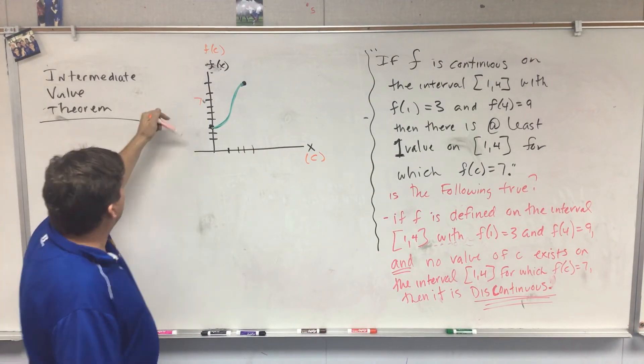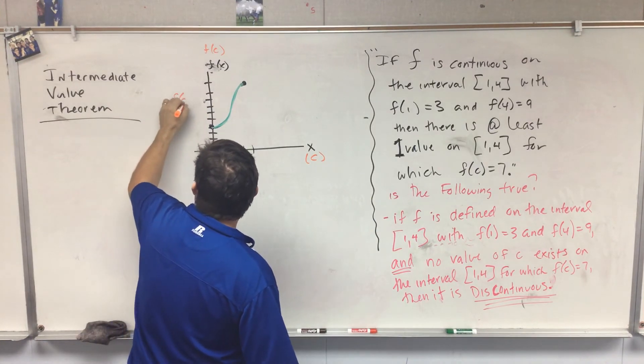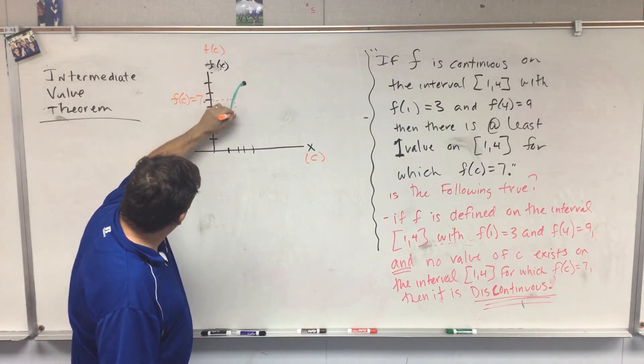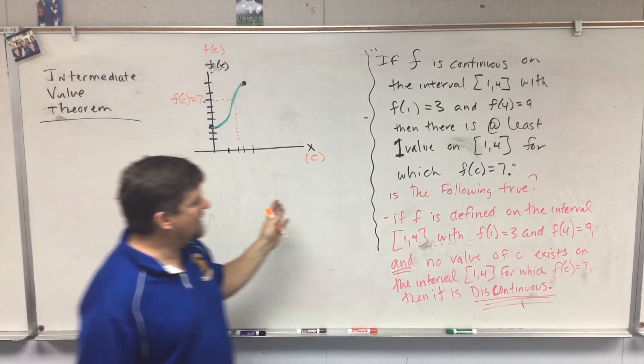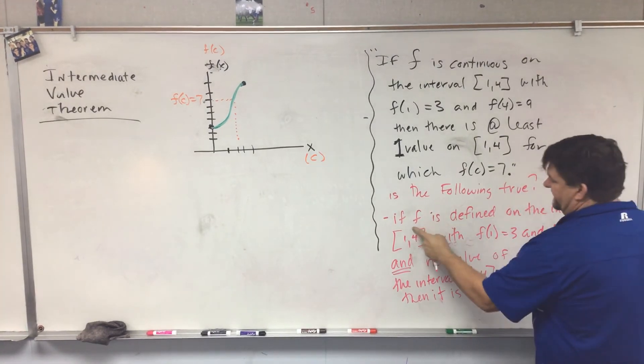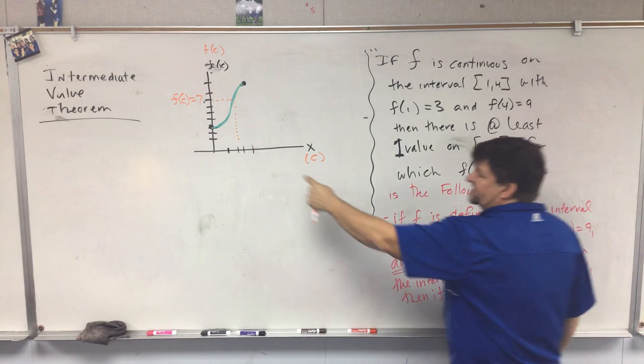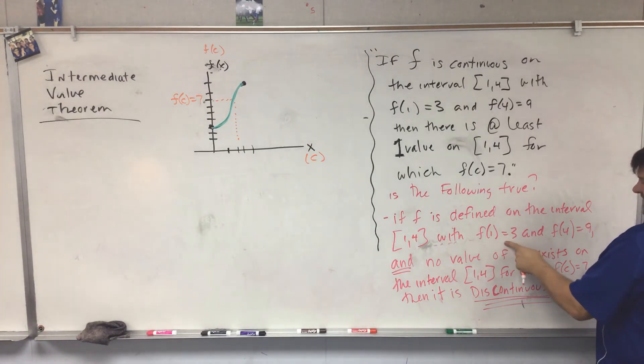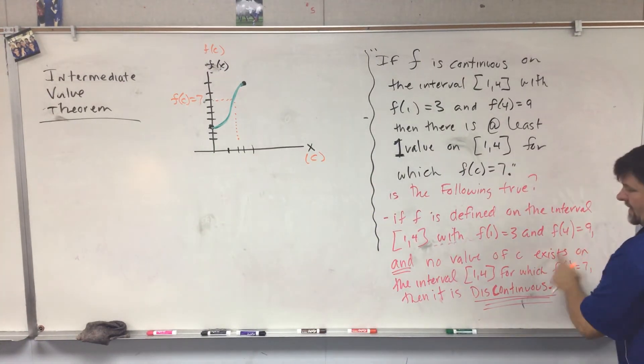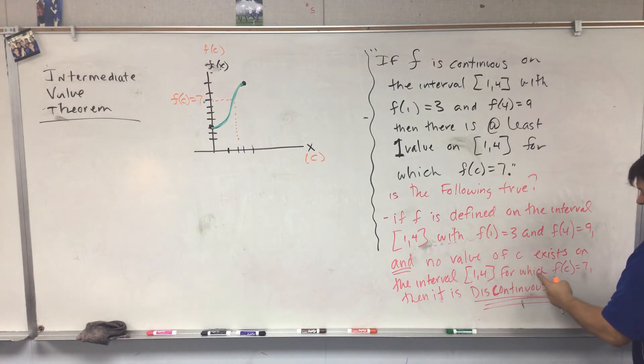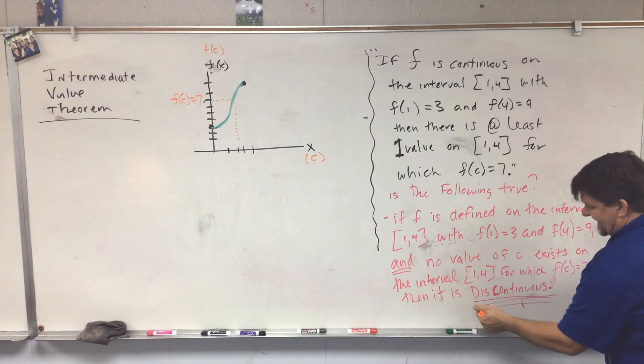All right, f(c) equals 7. So f(c) equals 7, it's in there somewhere, right? So right now it's a true statement the way they set it up. And then it says, is the following true? If f is defined on the interval 1 to 4, meaning there is a function there, with f(1) equal to 3 and f(4) equal to 9, which is what we plugged in right here, and no value of c exists on the interval from 1 to 4 for which f(c) equals 7, then it is discontinuous.